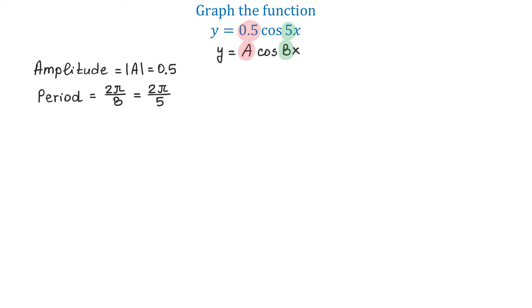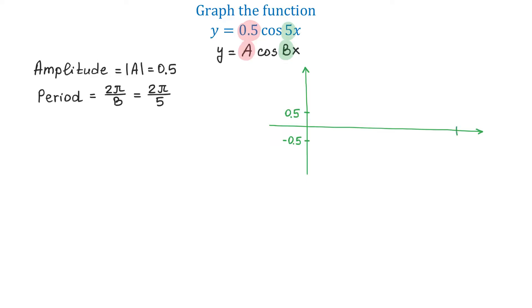Now, to the right, I will start the rectangular coordinate system. And because the amplitude is 0.5, on the y-axis I will plot 0.5 and negative 0.5. These will be the maximum and the minimum values of the function. And on the x-axis, I will plot 2π over 5.